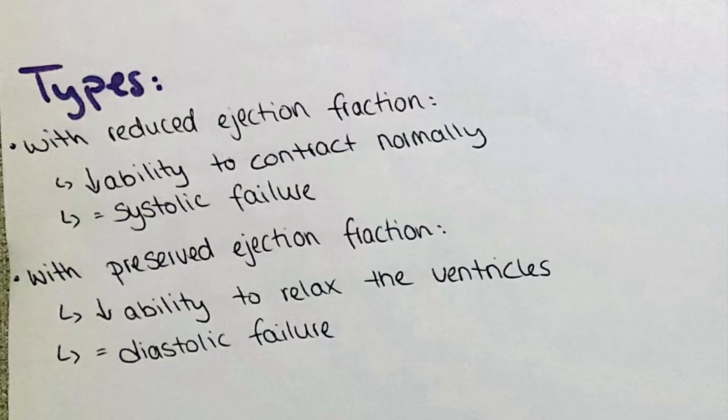We separate between left-sided heart failure with or without intact ejection fraction. The ejection fraction is a measurement of how much blood the left ventricle pumps out with each contraction. When there is a reduction in ejection fraction, the ability of the left ventricle to contract properly is reduced and we call it systolic failure, since the systole is the phase when blood is ejected out into the aorta.